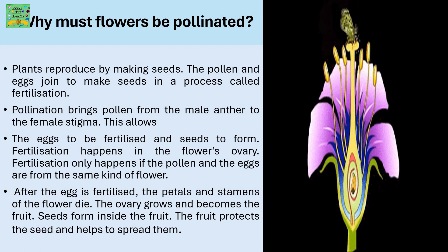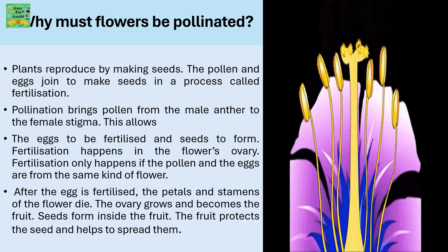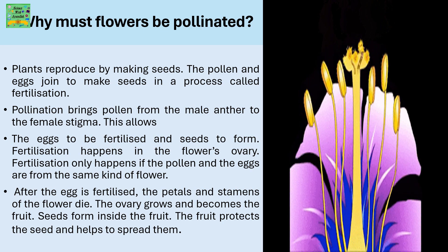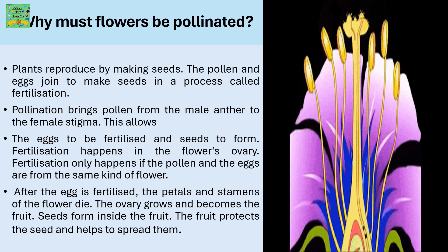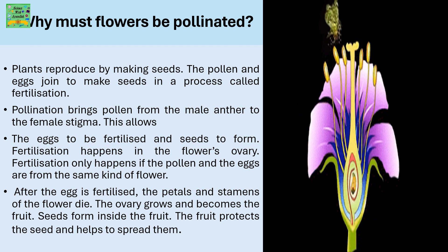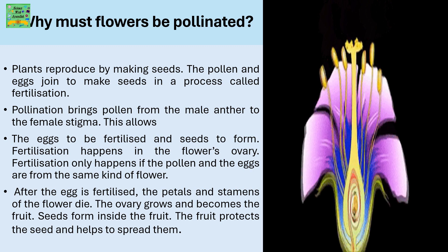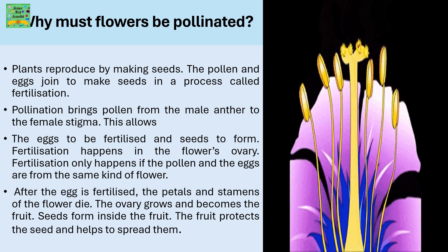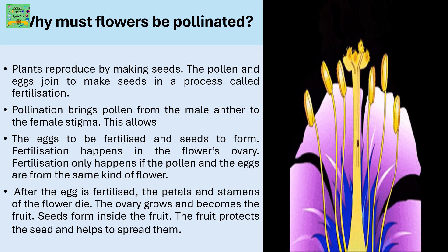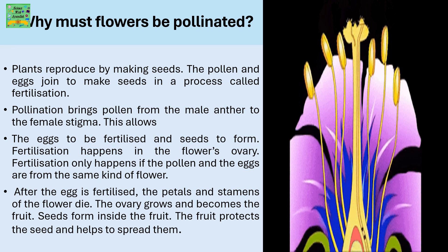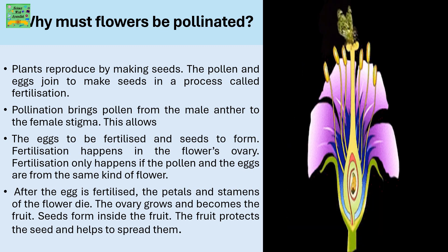Why must flowers be pollinated? Plants reproduce by making seeds. The pollen and eggs join together to make seeds in a process called fertilization. Pollination brings pollen from the male anther to the female stigma, which allows the eggs to be fertilized and seeds to form.